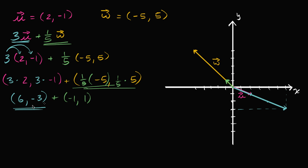Now we just want to add these two vectors. Adding by looking at components, the resulting vector adds the corresponding x components: six plus negative one, and the y component is negative three plus one. So the resulting vector is equal to five comma negative two.